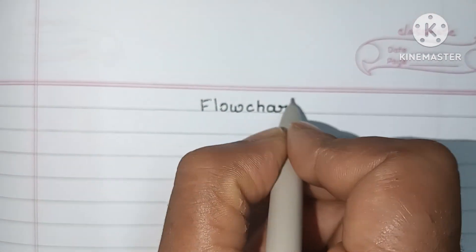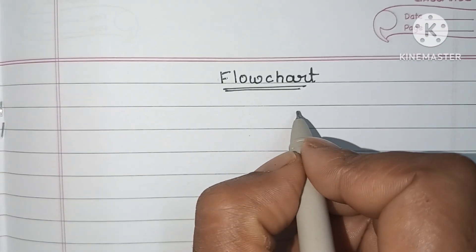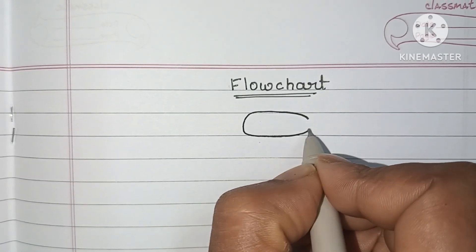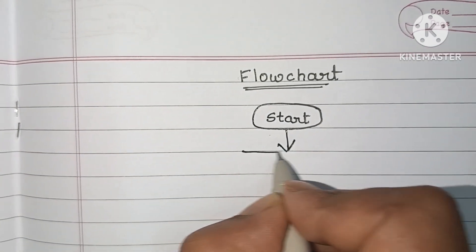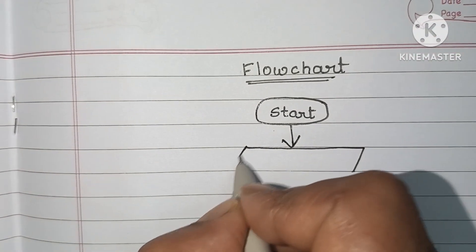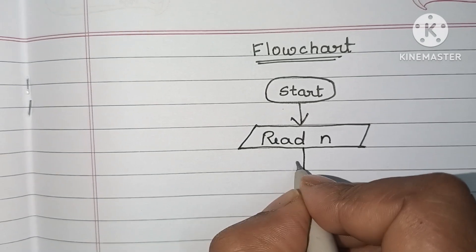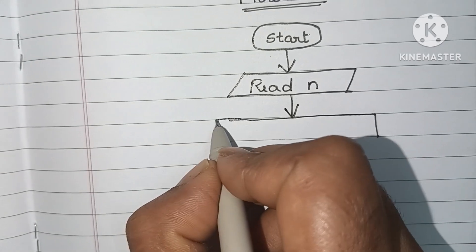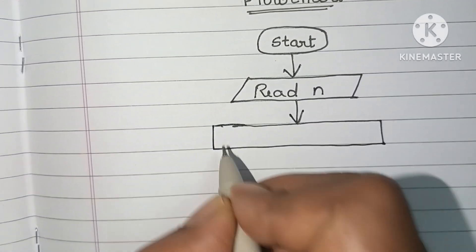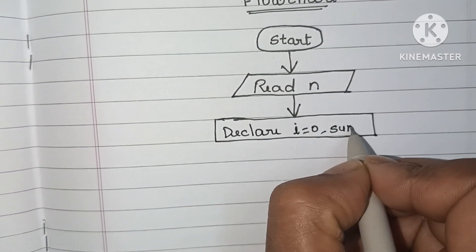Next, the flowchart. A flowchart is a graphical representation of a solved problem. It starts with a start statement written within an oval shape. Next, input values are written within a parallelogram shape — read n. Then we declare the values of i and sum; declaration is done within a rectangular shape, writing i = 0 and sum = 0.